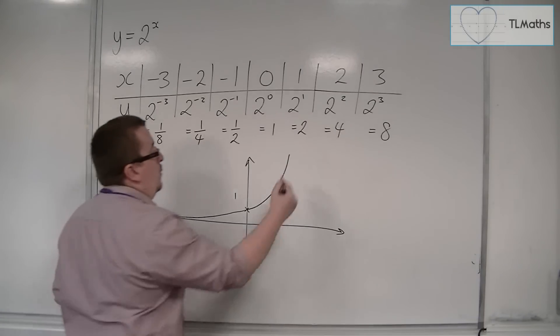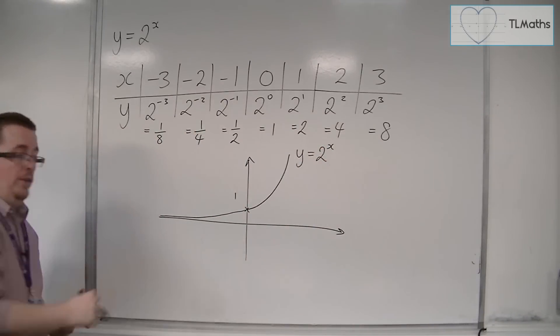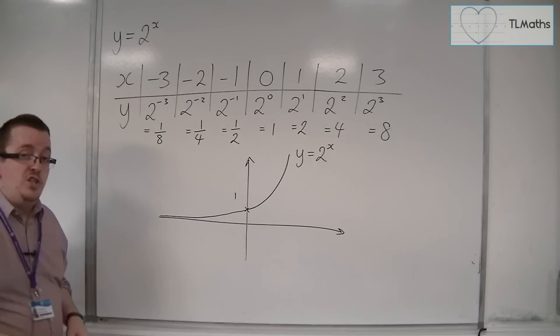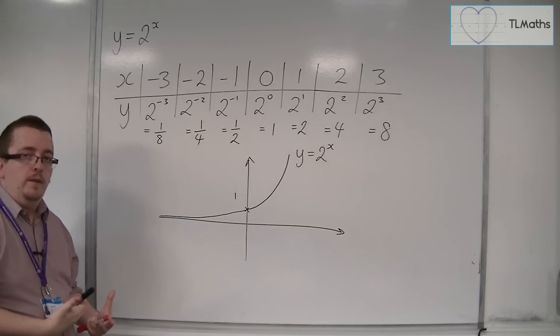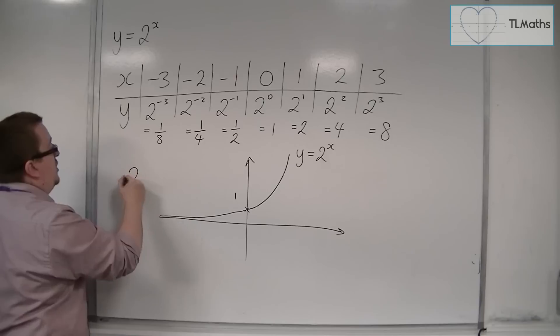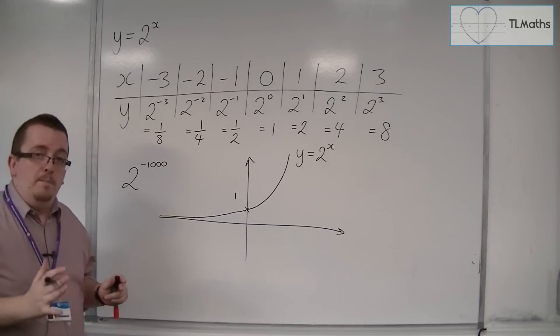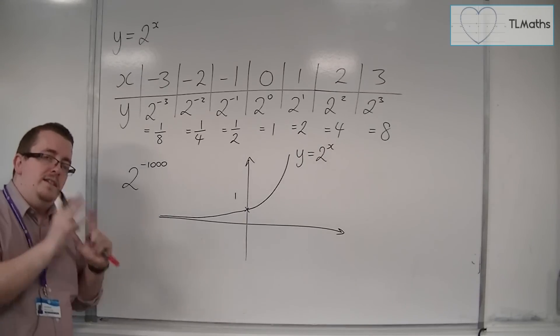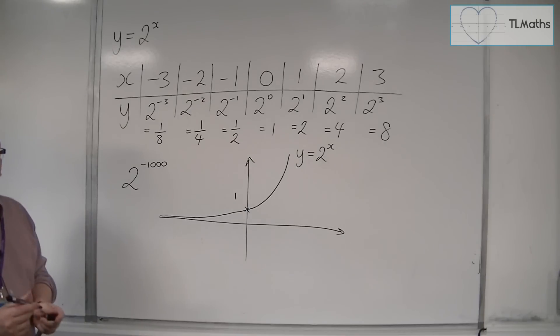This is what y equals 2 to the x looks like. It never crosses the x-axis because there's no value of x that I can substitute into this to get y to be 0. It doesn't matter if I choose 2 to the minus 1,000. That's a very small number, very close to 0, but it's still not quite 0. It doesn't matter how negative I make that number. It will still never reach 0.